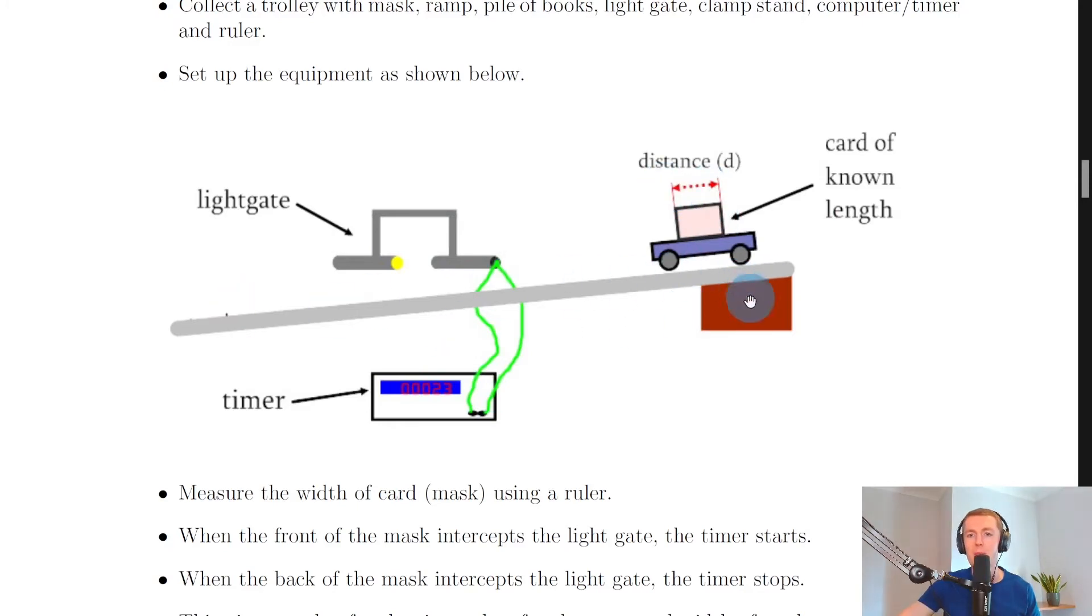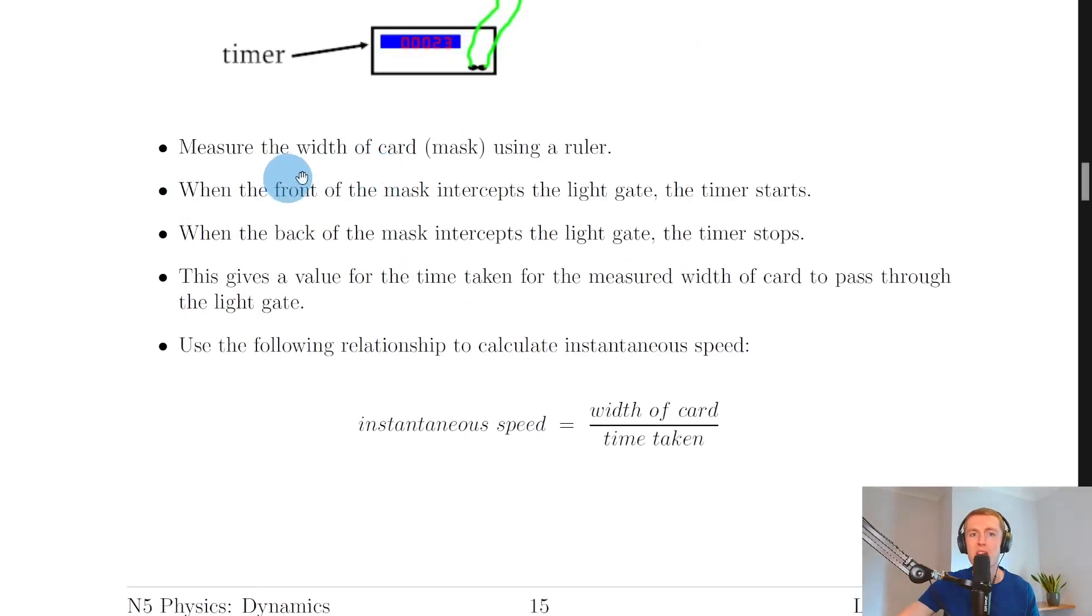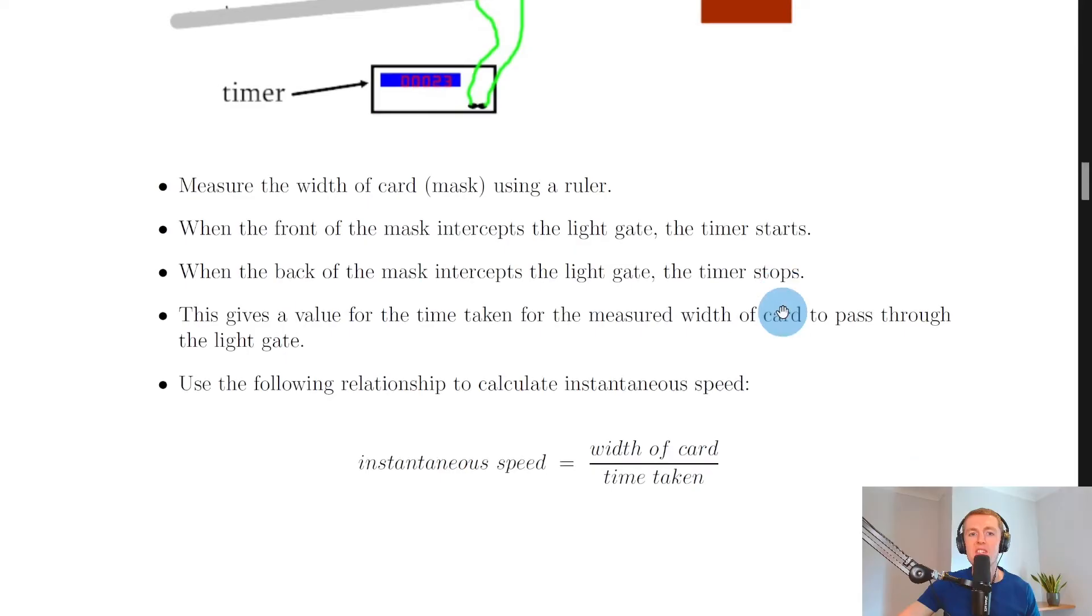The steps involved are to firstly measure the width of the card or mask using a ruler. So you would measure the width of this card using a ruler, and that can then be inputted into the timer.